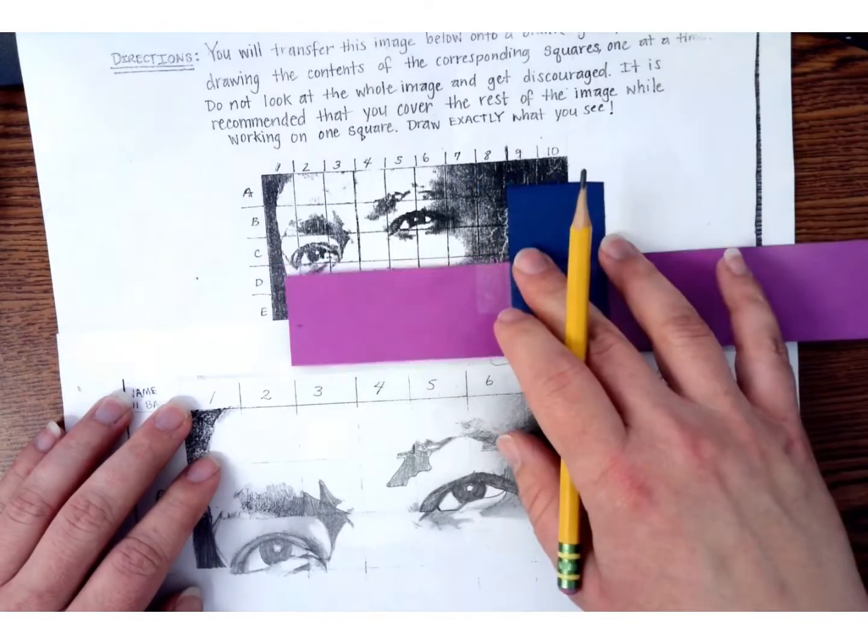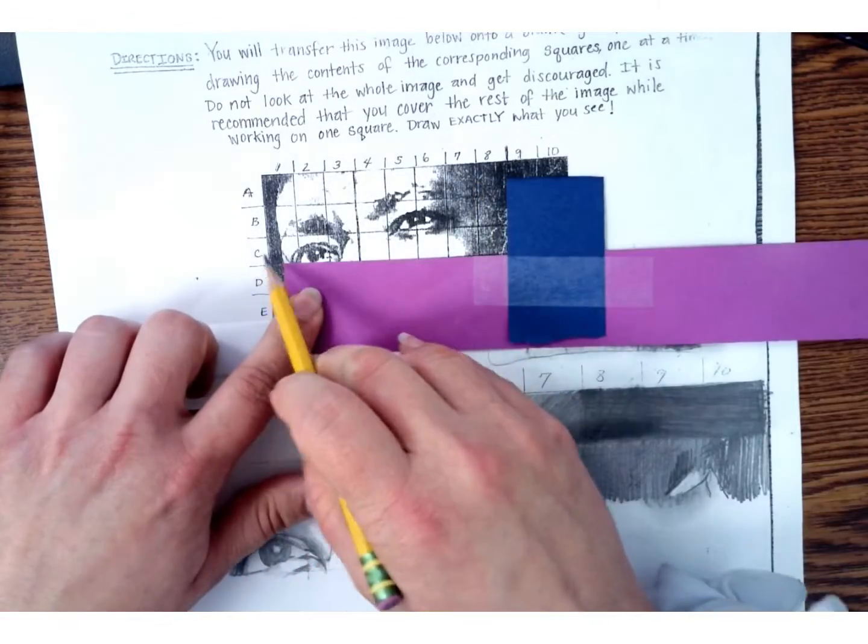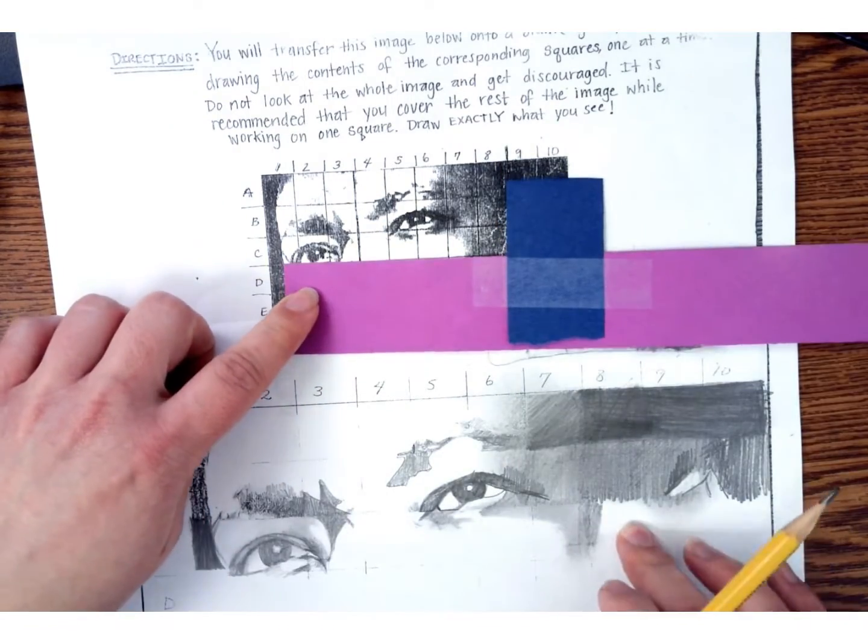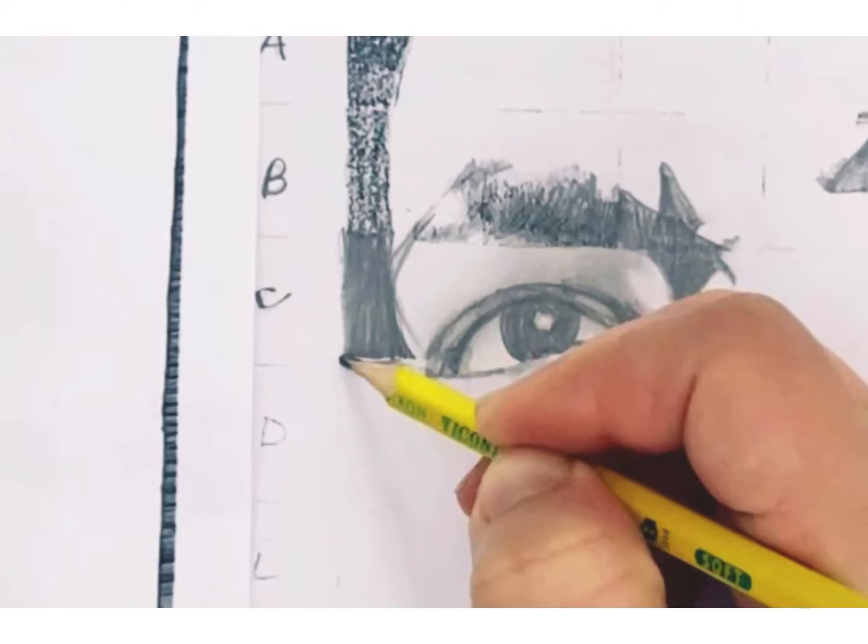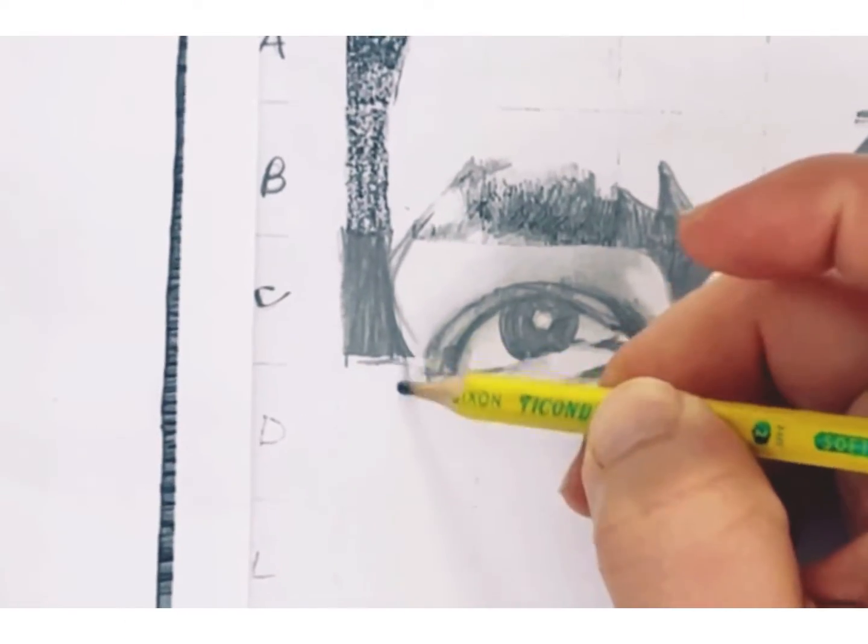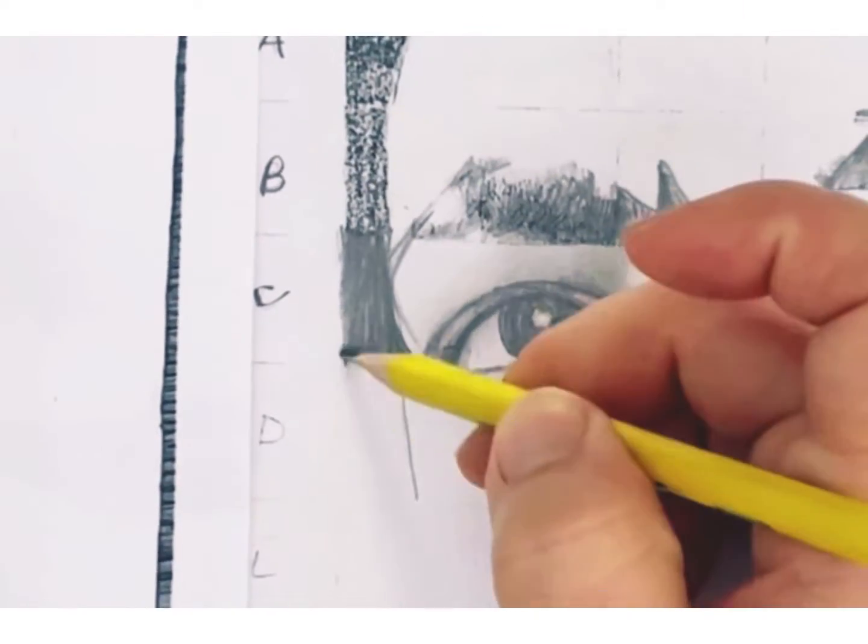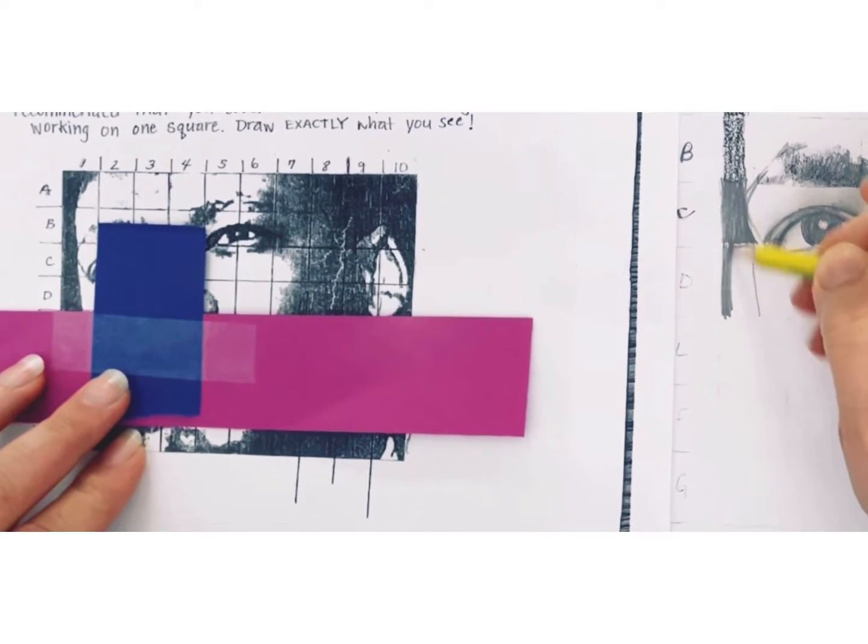Today I'm going to introduce you to the grid method of drawing. It allows you to produce an accurate drawing by reducing your subject to a series of small squares. The point is to trick the overwhelmed brain by breaking down the image into small abstract bits and blobs that it can't readily recognize.